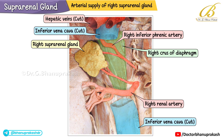Finally, the right renal artery and the cut end of the inferior vena cava are also clearly shown, completing the view of the arterial supply of the right suprarenal gland.